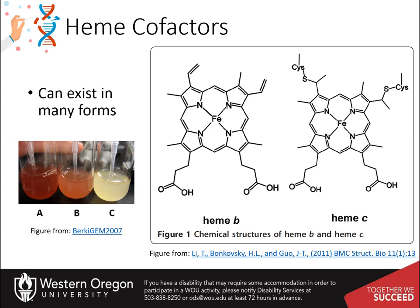Four major classes are recognized: cytochromes A, absorbing at 605 nanometers; B at 565 nanometers; C at 550 nanometers; and D at 636 nanometers.